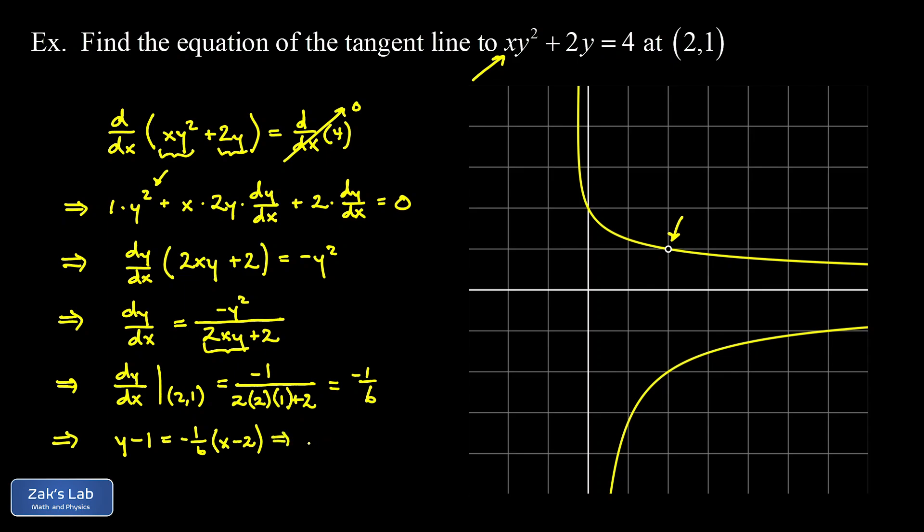And I normally write my tangent lines in slope intercept form which means just expand the right hand side and solve for y. So y = -1/6 x. And then when I distribute the -1/6 to the -2 that gives me positive 2/6 which is 1/3. But then when I add 1 to that which is 3/3 I get 4/3. So there's our final answer for the tangent line: y = -1/6 x + 4/3.